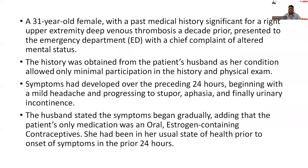A 31-year-old female with a past medical history significant for upper extremity deep venous thrombosis a decade prior presented to the emergency department with chief complaints of altered mental status. The history was obtained from the patient's husband, as her condition allowed only minimal participation in the history and physical exam.